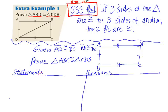side, side, abbreviated SSS. That is, if you can show that all three sides of one triangle are congruent to the three sides of another, then the two triangles are congruent.